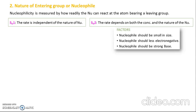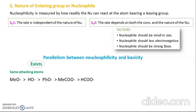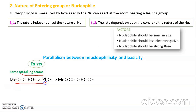Quickly reviewing factors from the first video: the nucleophile should be small in size to approach the central carbon easily; it should be less electronegative so it can easily donate electrons; and it should be a strong base. Regarding when parallelism between nucleophilicity and basicity exists: when the attacking atom is the same across the species being compared, nucleophilicity and basicity are correlated and decrease together.